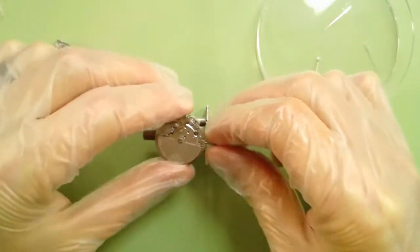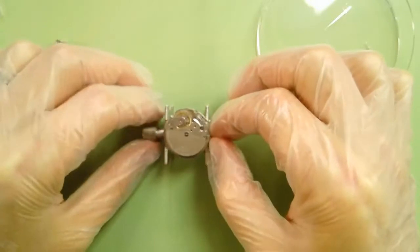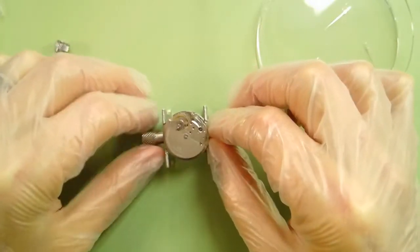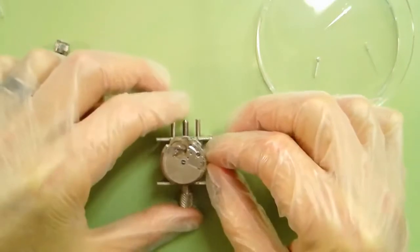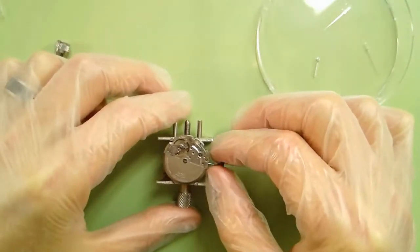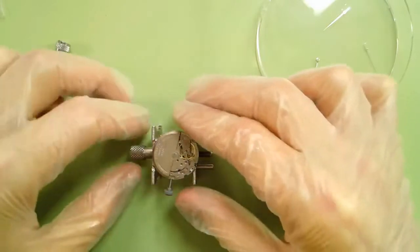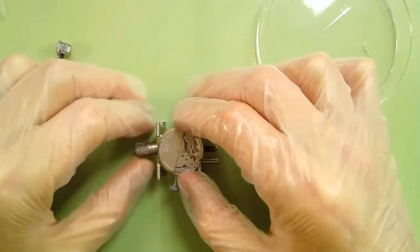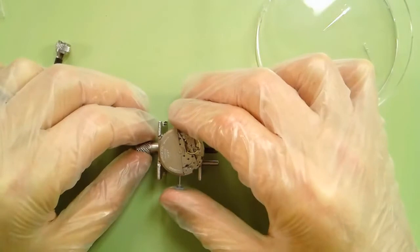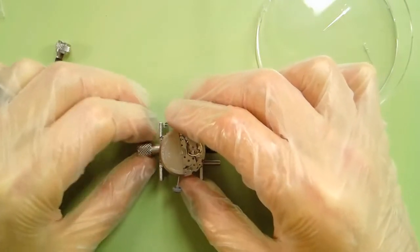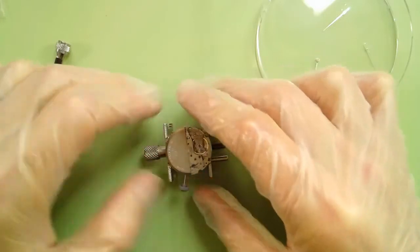So you really just place the movement over top of the movement holder. You want to get it in there level. When you put it in, you want to make sure you're not doing anything to hit the balance wheel. There really isn't a way to hit it on this movement. It's kind of inset. I've worked with other movements where the balance wheel is at the edge and you've got to be really careful when you're working with it.